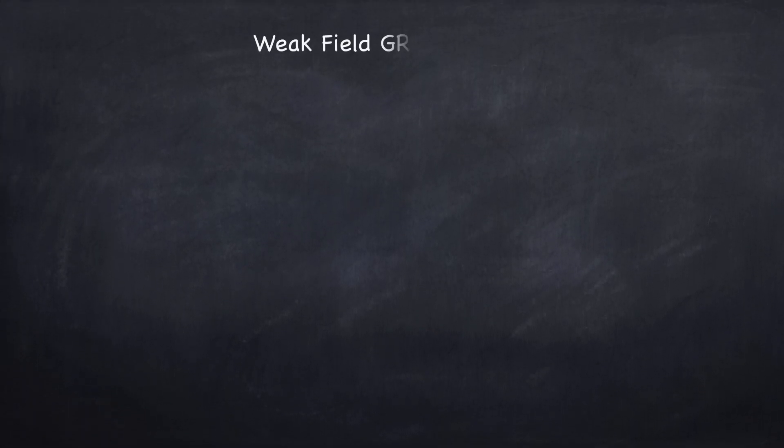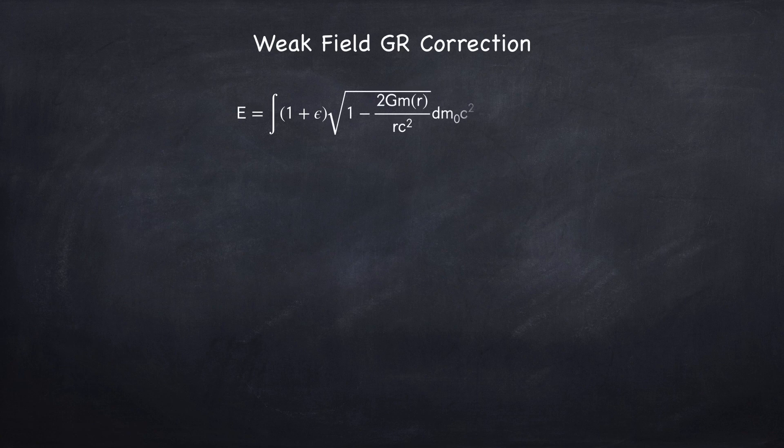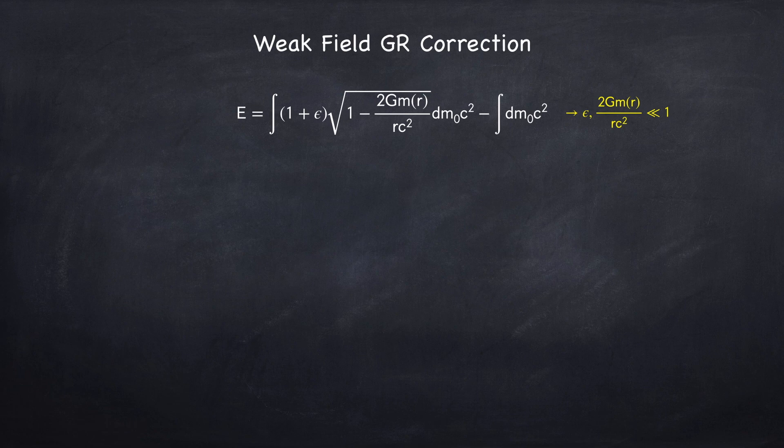Finally, we derived the first-order correction to the Newtonian energy in a weak field limit. So this is called the post-Newtonian correction. And this is under the condition that epsilon and the metric deviation are both much less than 1. So in this case, the binding energy could be written as the Newtonian energy plus a small correction due to GR.